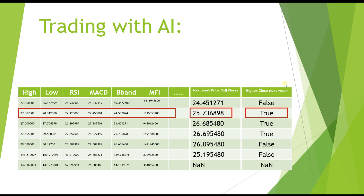Hello everybody, welcome back to Echo Engineering. In the previous video we tried to use labels to predict whether the next candle will close at a higher price or a lower price compared to the current candle — just true or false. The model would predict true when the next candle closes higher and false when it closes lower. We call this machine learning modeling classification.